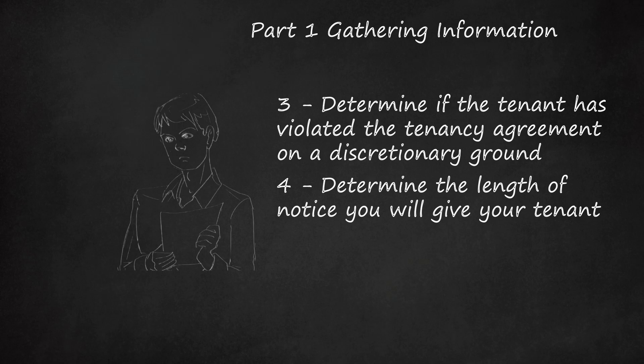For Grounds 3, 4, 8, 10, 11, 12, 13, 15, and 17, you must give at least 2 weeks notice. A Section 8 notice does not itself order eviction but simply lets your tenant know that you intend to apply for a possession order at the end of the required notice period. Your tenant may decide to vacate the property during the notice period stated by the lease. If the tenant does not, you can then apply for a possession order.